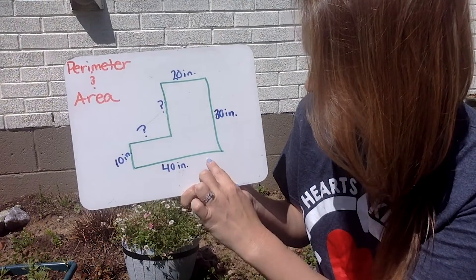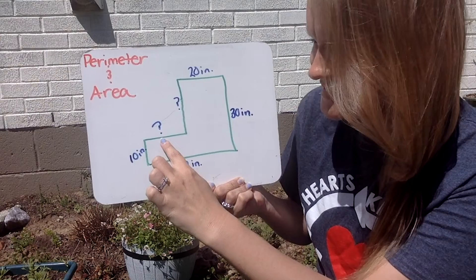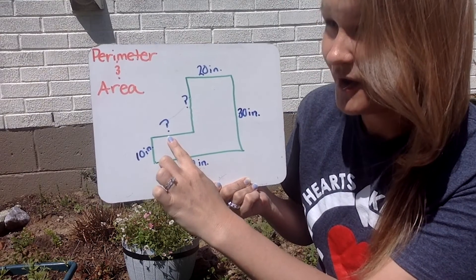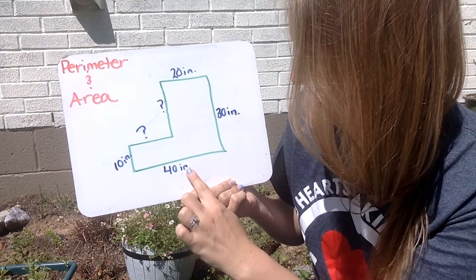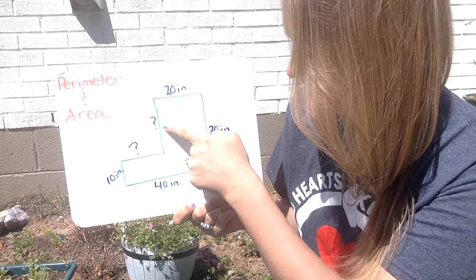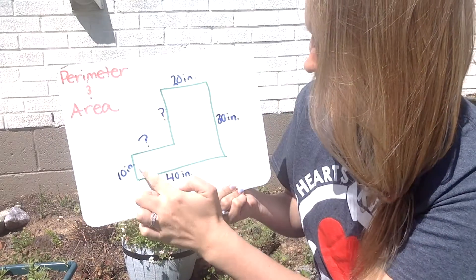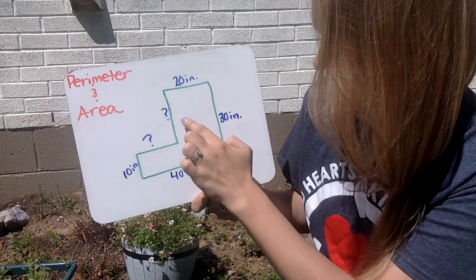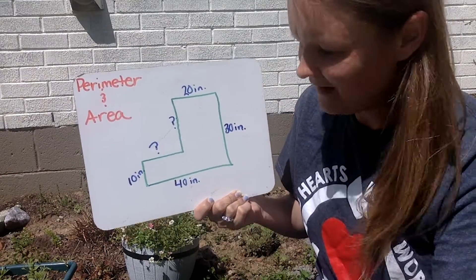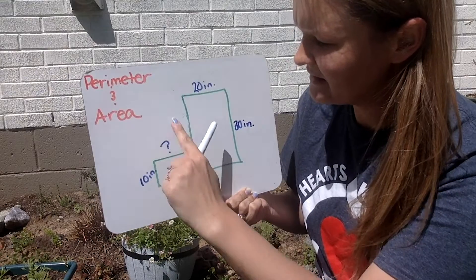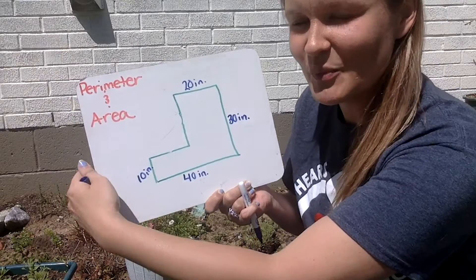Well, maybe if I know that this total down here is 40 and this piece is 20, then that means this piece has to be 20 inches as well, because 20 plus 20 would give me this bottom piece. What about this missing side? Well, if I know this side is 30 and I take 10 inches here, how do I get to 30? With 20 more inches. So if I know this is 20 inches and I know this is 20 inches, then how do I figure out my total area and my total perimeter?